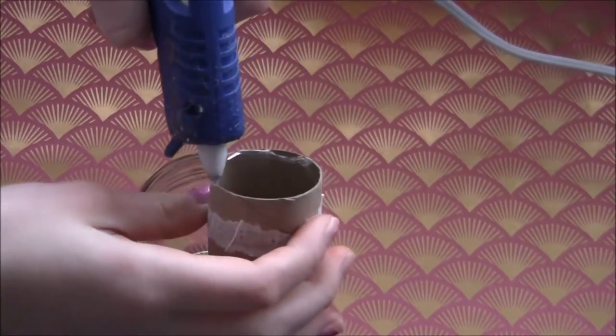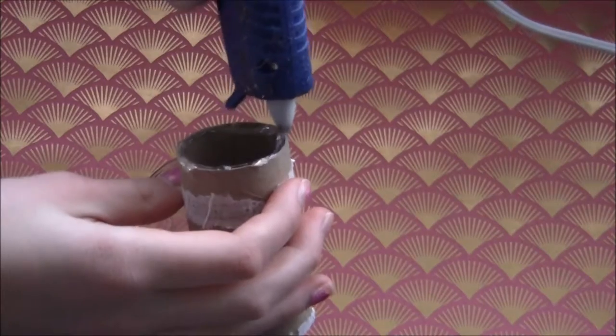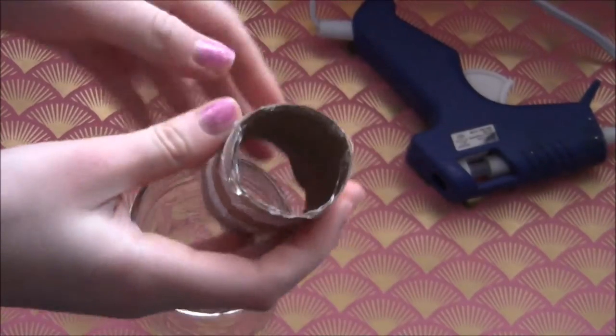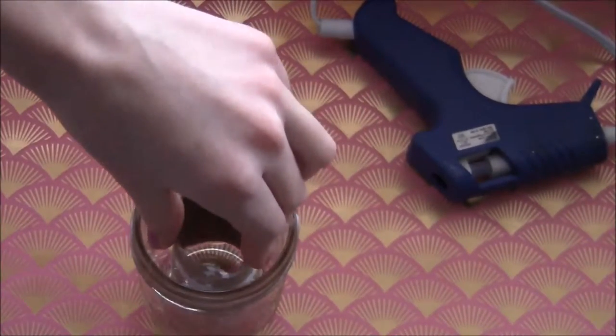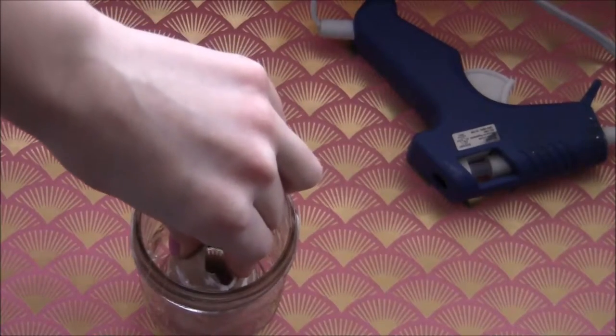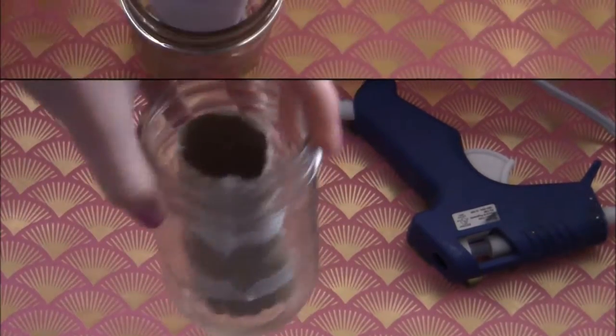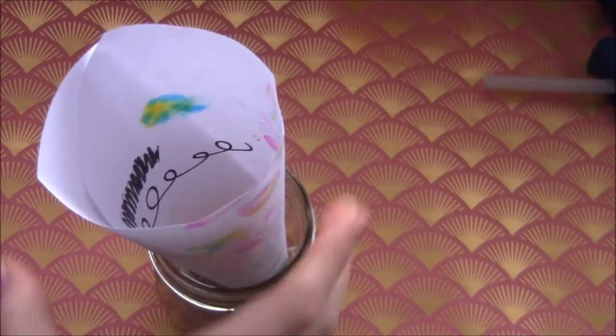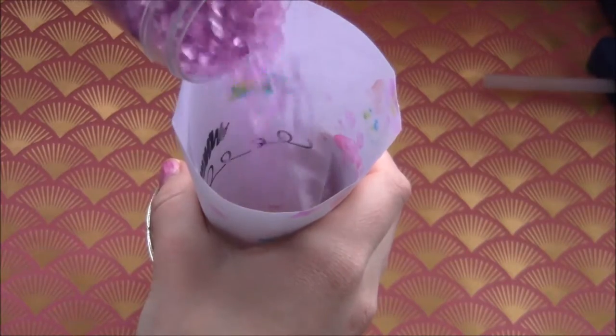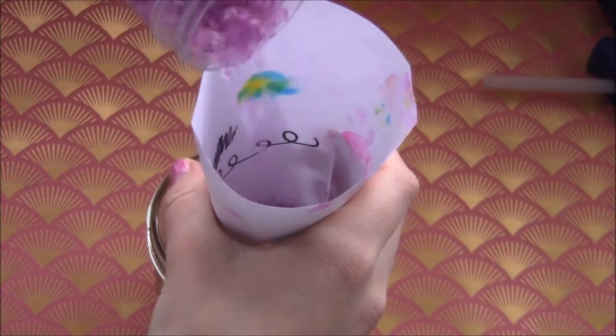Next, take some hot glue and just glue that to the bottom of the jar. Place your funnel inside the jar like this and just pour your rock or gravel into the jar. And do that all the way around the jar.